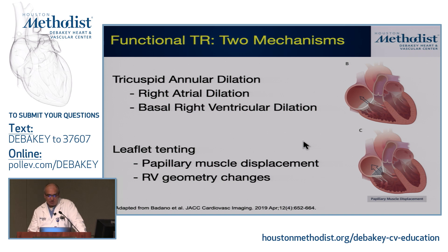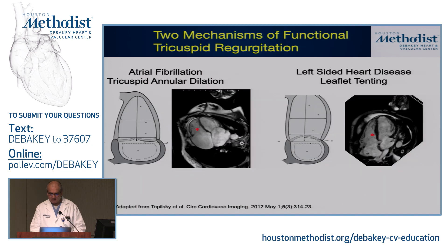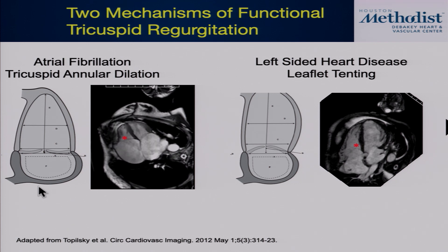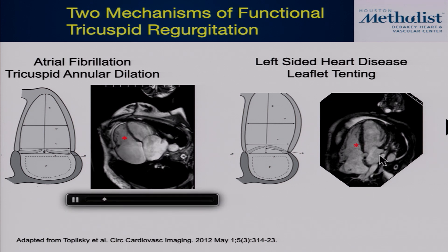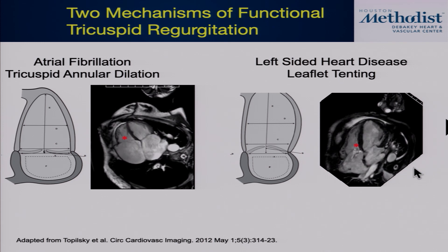Mechanistically, two different abnormalities can lead to tricuspid regurgitation. The classic secondary TR from RV problems leads to distorted RV geometry, papillary muscle displacement, and tethered tricuspid leaflets. The other scenario is right atrial dilatation with tricuspid annular dilatation — so-called atrogenic tricuspid regurgitation with dilated annulus and flat leaflet coaptation. The right hand example shows left heart disease leading to RV abnormalities causing tethering of the tricuspid leaflets.